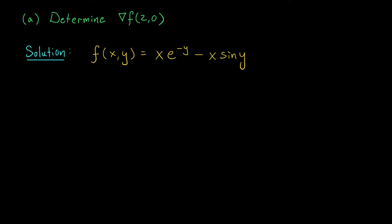In part a, we're looking for the gradient of our function at the point (2, 0). The gradient is the vector of partial derivatives, so we should start by finding fx and fy. Here's our function once again. The partial derivative with respect to x, fx at (x,y), is given by e^(-y) - sin(y).